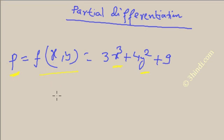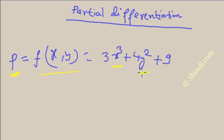When p is a function of x and y or other variables, if you differentiate p with respect to a single variable and treat all other variables as constant, then this is known as partial differentiation. Here in this example, p is the function of x and y. If you want to differentiate p with respect to x, treating y as constant, then that is called partial differentiation of p with respect to x.